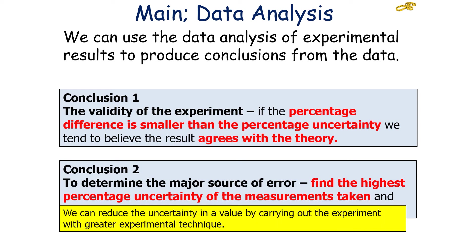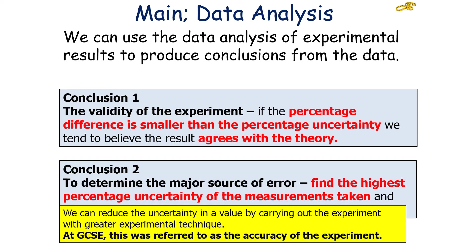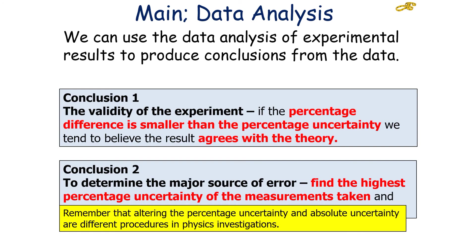We can also reduce the uncertainty in any value by carrying out the experiment with a greater or better experimental technique, which at GCSE we refer to as the accuracy of the experiment. Please remember that altering the percentage uncertainty and the absolute uncertainty are different procedures in physics investigations.